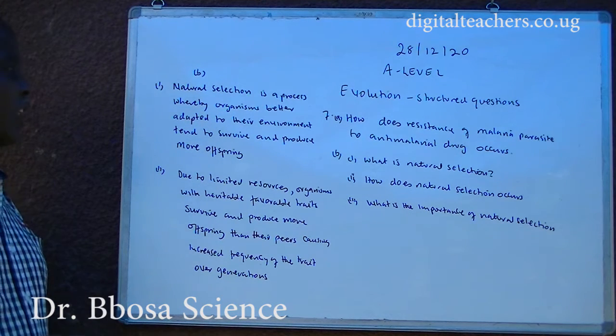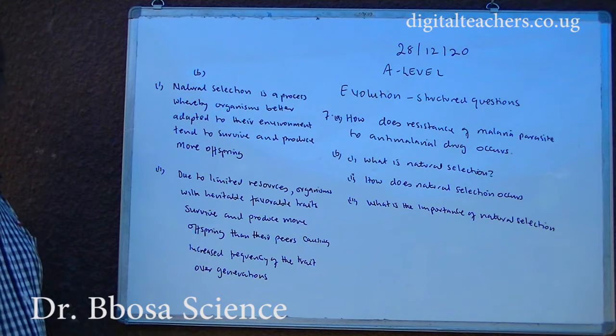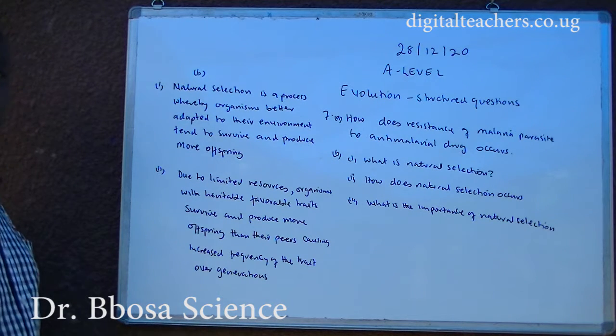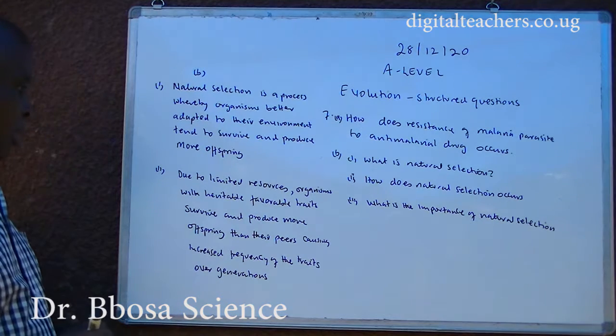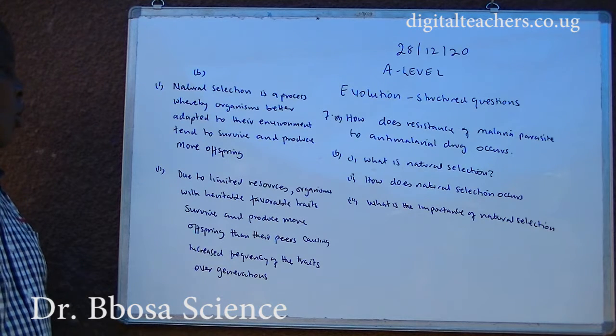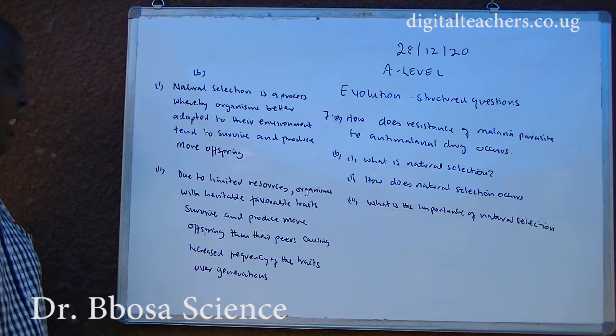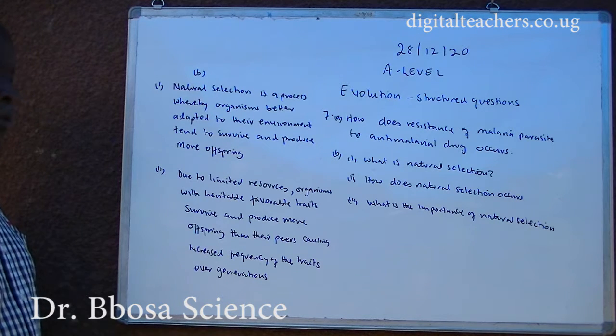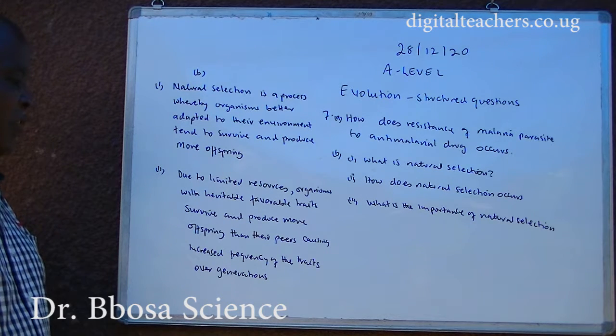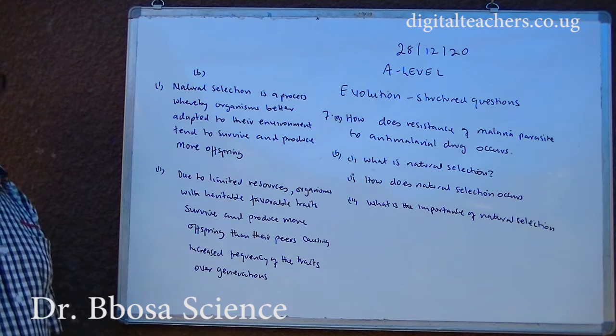B one. Natural selection is a process whereby organisms better adapted to their environment tend to survive and produce more offspring. Two, due to limited resources, organisms with heritable favorable traits survive and produce more offspring than their peers, causing increasing frequency of the traits over generations. Three, the importance of natural selection allows organisms with favorable characteristics to survive and reproduce, while eliminating undesirable characteristics from the population.